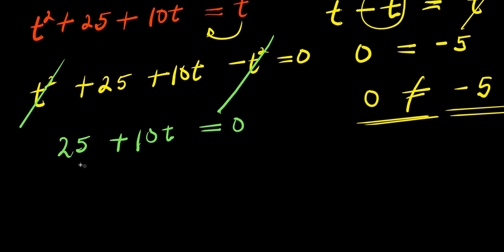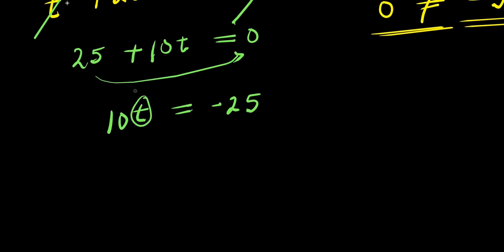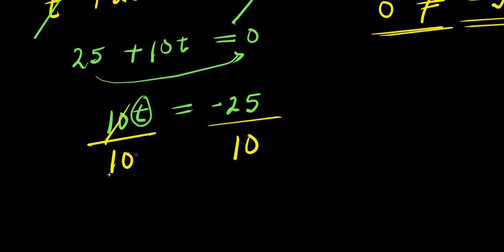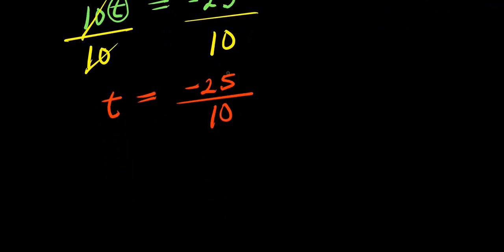So to solve for t, I move 25 over here and have 10t equals negative 25. I can isolate t by dividing both sides by 10. 10 cancels on the left, giving t equals negative 25 divided by 10. Simplifying, 5 divides both numerator and denominator, so t equals negative 5 divided by 2.